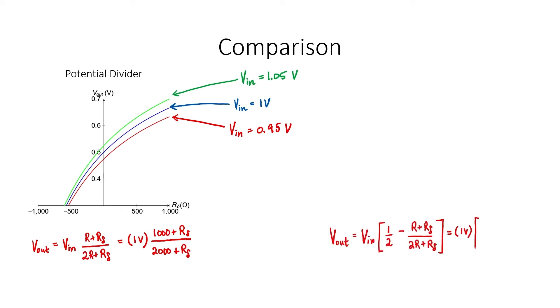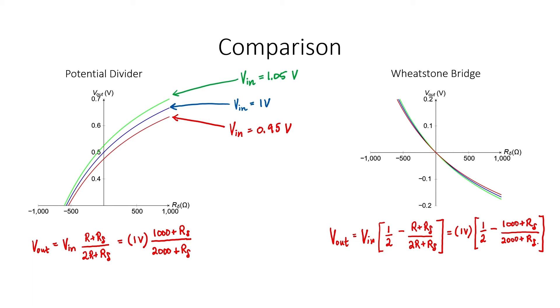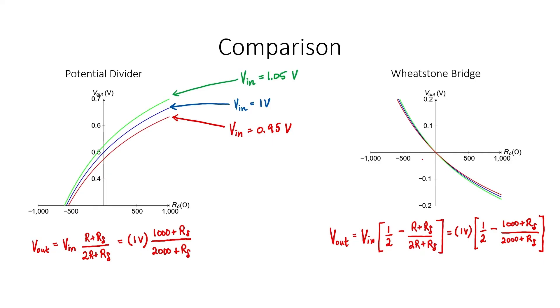Now let's plot the output voltage versus R_delta for the Wheatstone Bridge sensor. As you can see, the situation is much improved compared to the potential divider. When the Wheatstone Bridge is balanced, any error in the input voltage will not show up in our measurement of the output voltage, allowing the Wheatstone Bridge to give us a more accurate value for R_delta. Additionally, because we don't have the 0.5-volt DC offset, we wind up with a more precise measurement of R_delta. The three curves for the Wheatstone Bridge correspond to exactly the same input voltage variations plotted for the potential divider — the Wheatstone Bridge gives a much more accurate measurement because noise in the input voltage does not appear in the output voltage when the bridge is balanced.